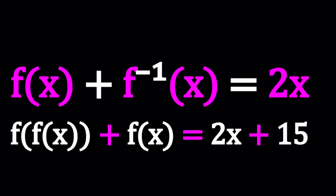Hello everyone. In this video, we're going to be solving an interesting functional system. We have f(x) + f⁻¹(x) = 2x, and f(f(x)) + f(x) = 2x + 15. We're going to be solving for f(x) — finding an explicit expression. This problem has been inspired by an APMO problem; APMO is the Asian Pacific Math Olympiad. Let's see how we can approach this problem.